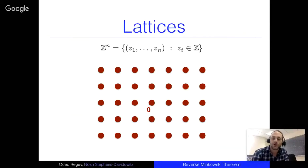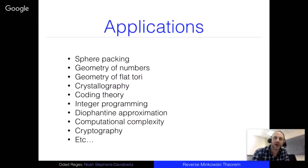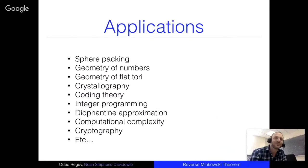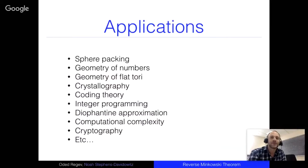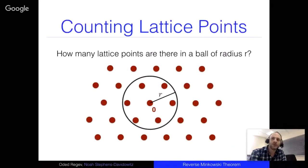Lattices are quite important objects with many applications. In particular, they're intimately related to sphere packing — there have been major results in sphere packing recently in 8 and 24 dimensions. The geometry of numbers is essentially the study of lattices. Flat tori are the dual space of lattices. And to this audience, the most important applications are in computational complexity and cryptography, where lattices have become quite important recently.